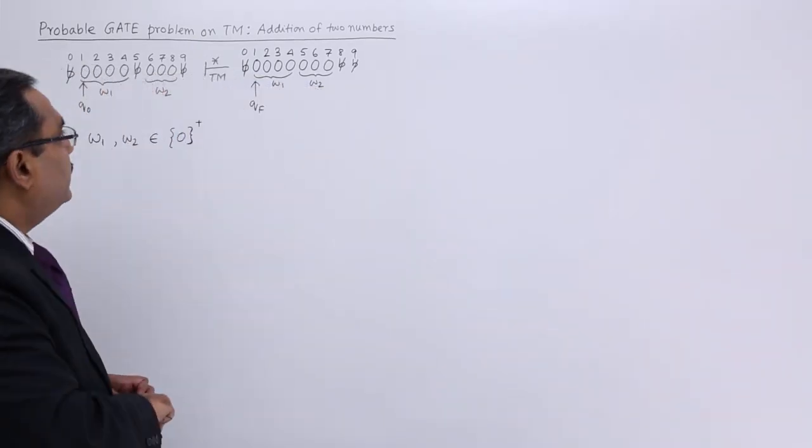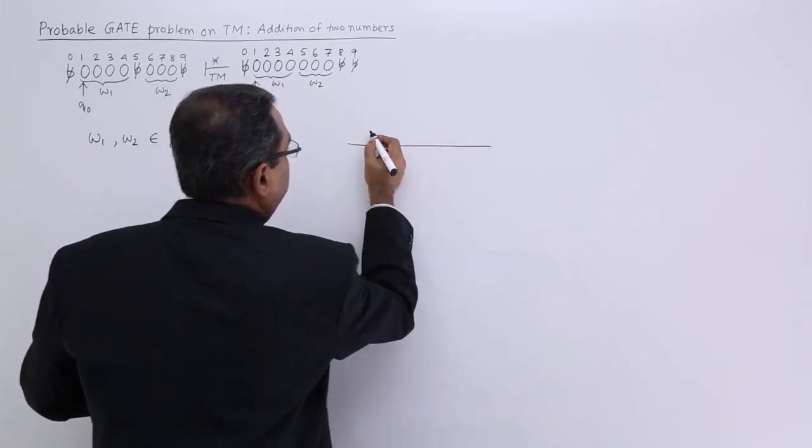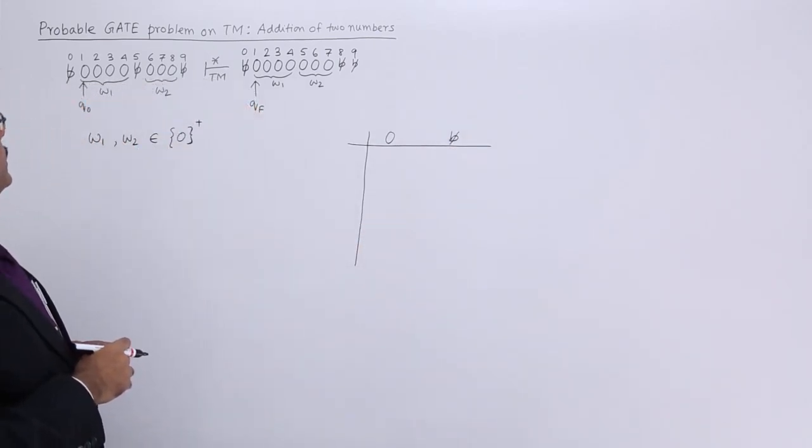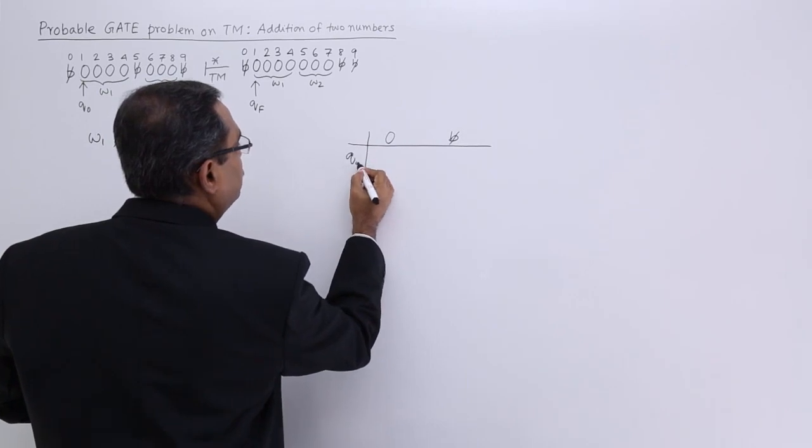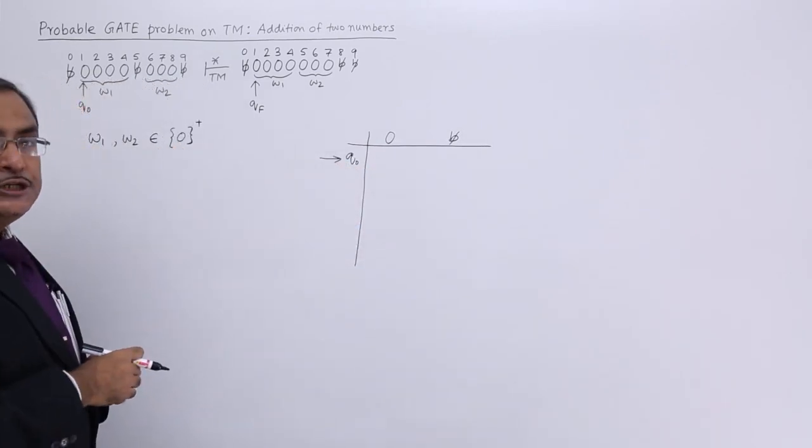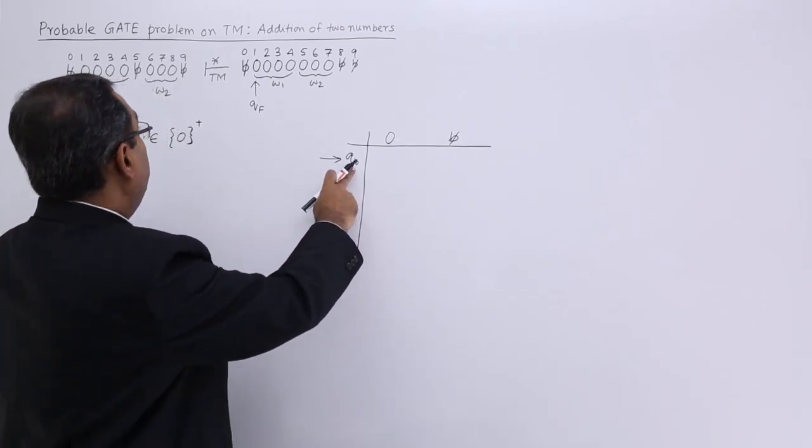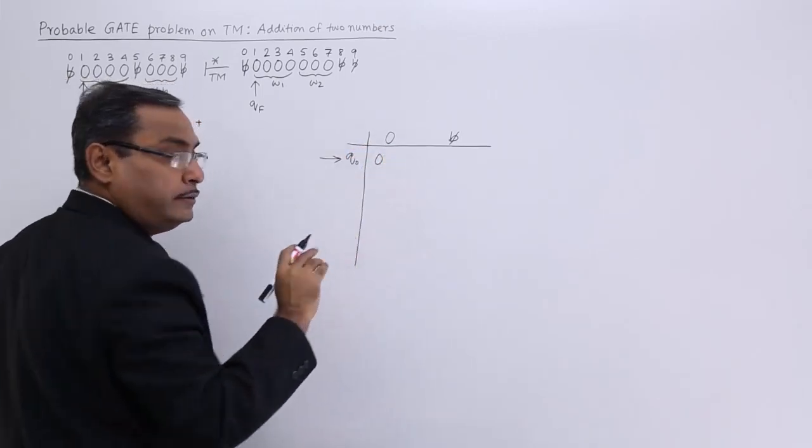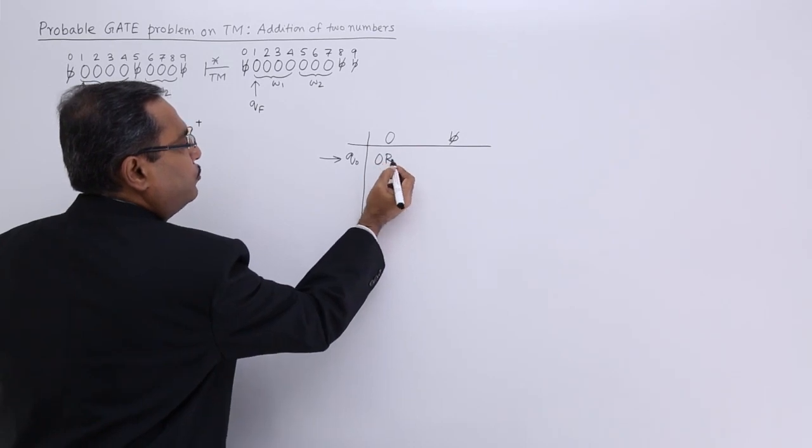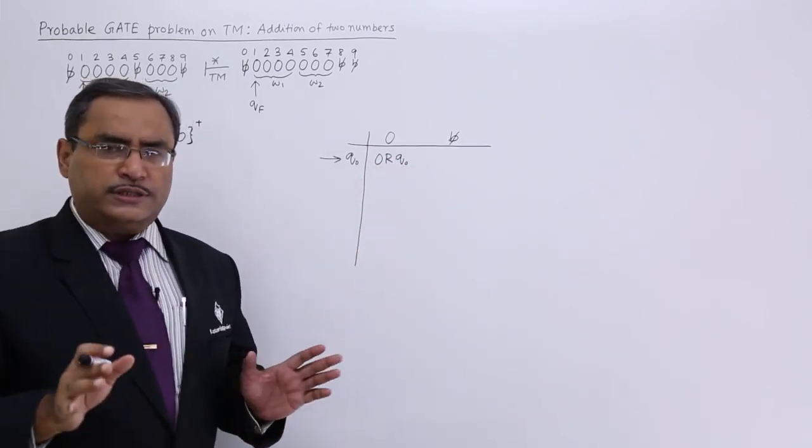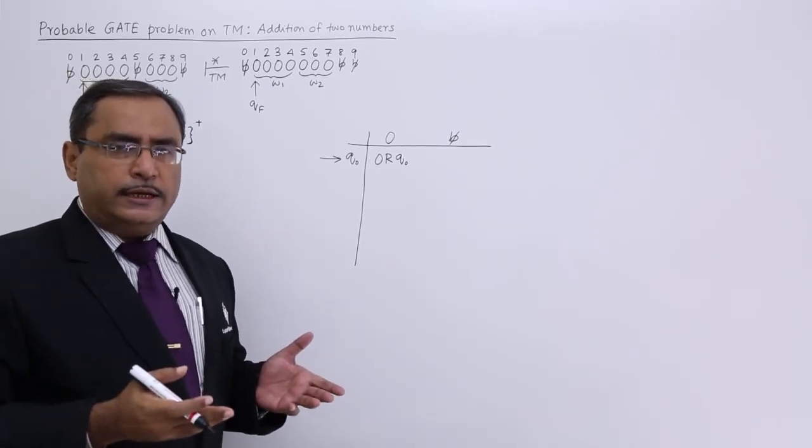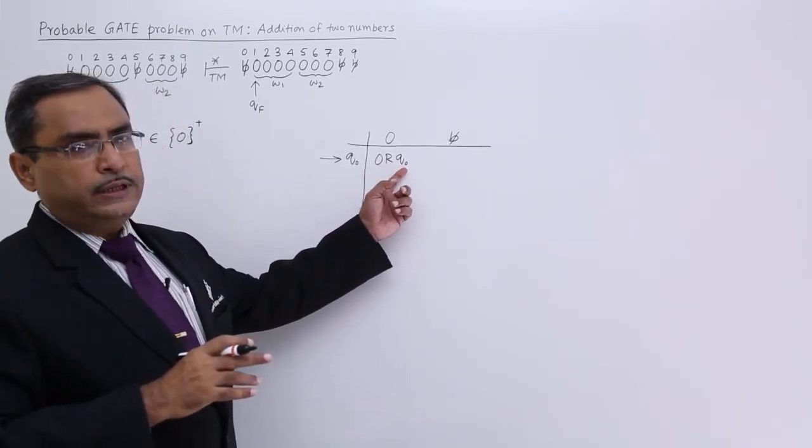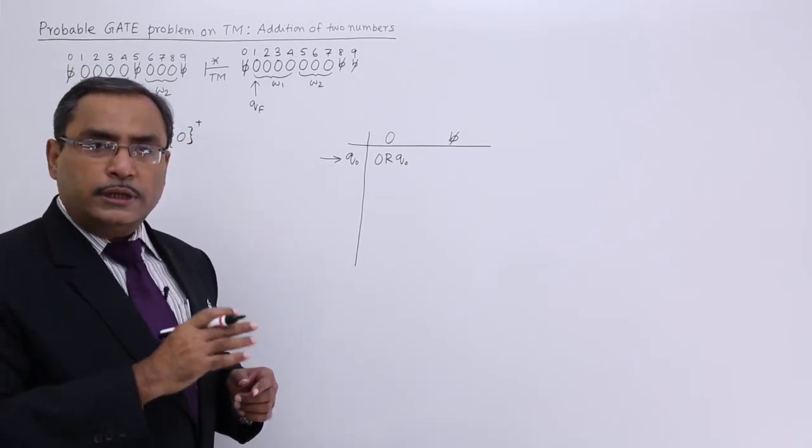What are the symbols we are expecting here? We are expecting symbols like 0 and blank. We are not going to expect any other symbol here. My initial state is Q0. Then how to proceed? 0 is there. At first I shall pass through this 0. If I get 0 then I shall write 0 and I need not to change them. I shall write 0 then I shall go to the right hand side and I shall maintain the state Q0. I should not change the state because I do not know how many 0s are there in W1. So it is better to keep myself with the state Q0. In this way I shall pass through all the 0s in W1.